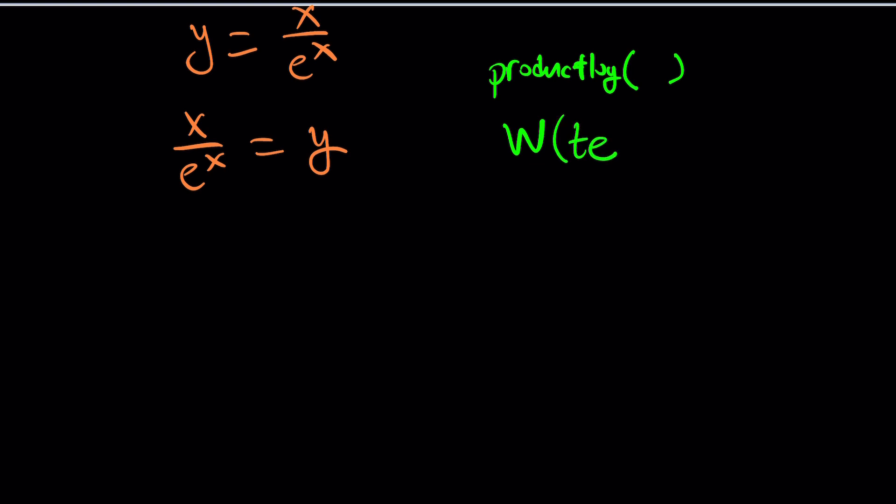Wolfram Alpha will tell you the same thing if you use the product log, but W(te^t) = t. So basically we're trying to invert where we have a function f(t) = te^t, and its inverse is going to take te^t and return t, and we call this inverse function W. Obviously we don't have an explicit way to express it.